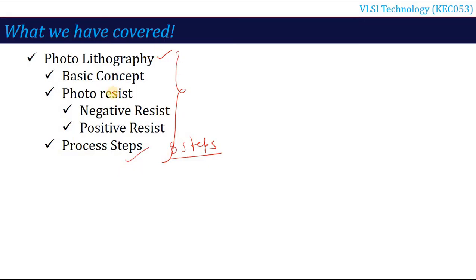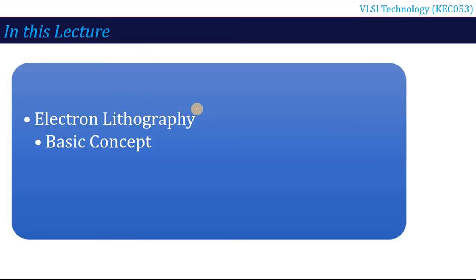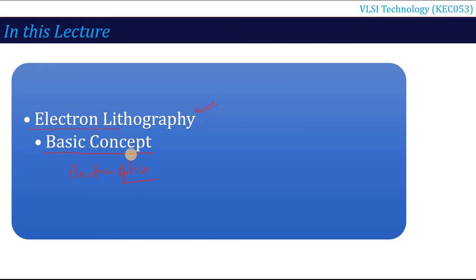Now, in this lecture, we are going to talk about another type of lithography called electron lithography. We will cover the basic concept of electron lithography and what is the electron optics — what kind of electron movement and arrangement is involved in electron lithography.